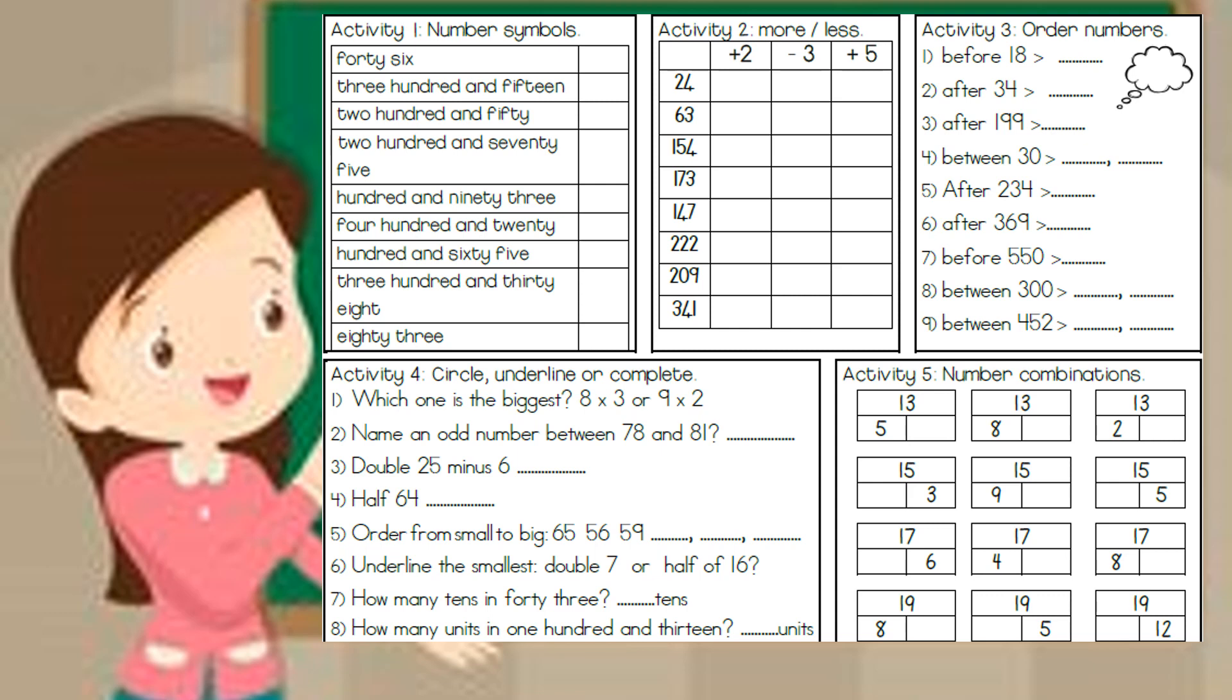Number 5. Order from small to big. Number 6. Underline the smallest. Double 7 or half of 16. Once again, you will have to go and work it out. And then get the answer. You cannot just guess the answer. Number 7. How many tens in 43?